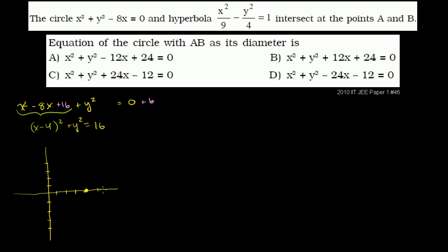Going up 4, all of those points are going to be on the circle. Let me draw that a little bit neater. Those points are all going to be on our circle, so the circle looks something like this. It's not drawn as neatly as it could be, but that's our circle.